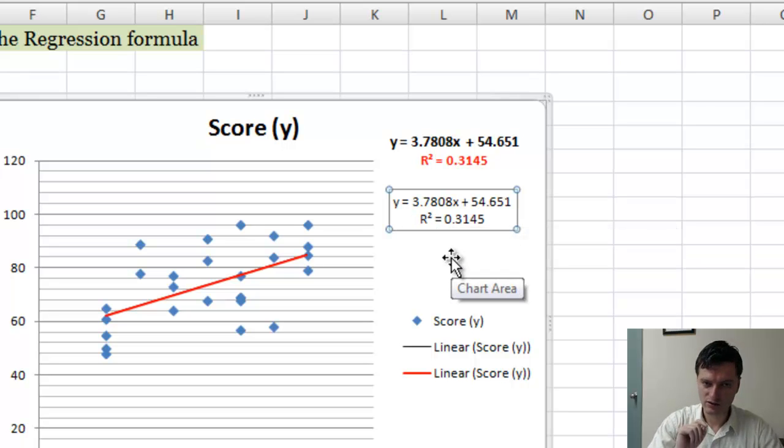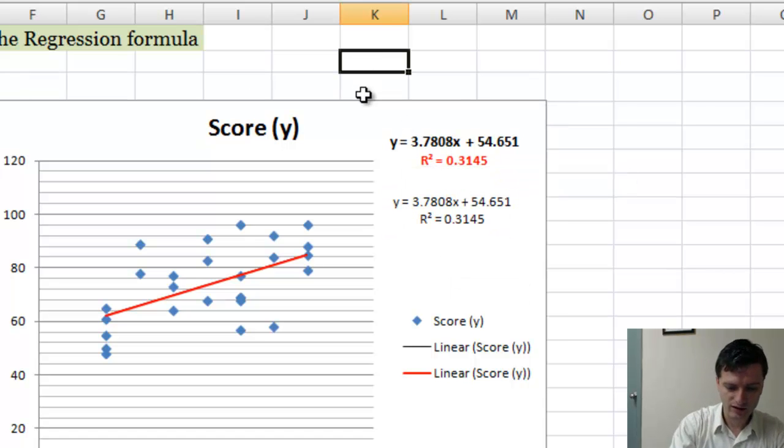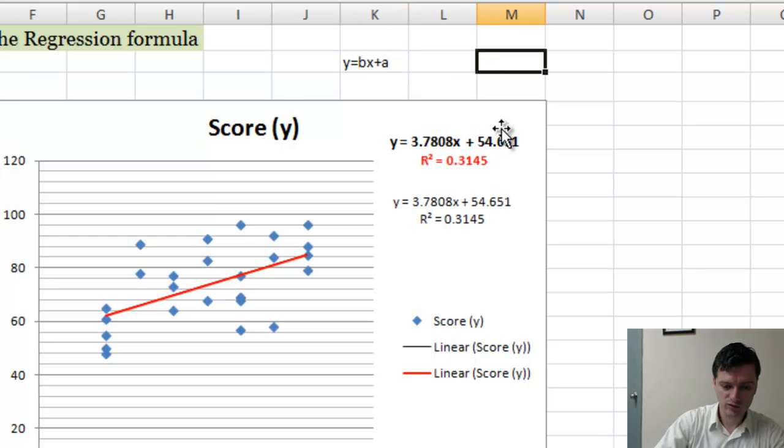One other thing that I want to show you. If you see, Excel actually uses the formula Y equals BX plus A, where A is the intercept, B is the slope. I showed you the formula of Y equals A plus BX. It's the same formula. It's just that the factors have changed places.